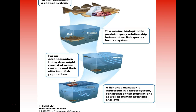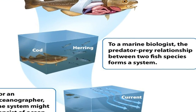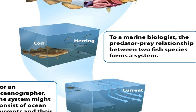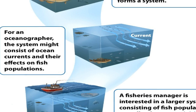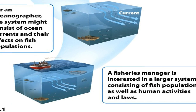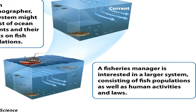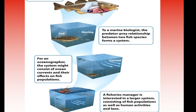A system could mean anything. It could be referring to an individual organism like the codfish here, it could be referring to multiple species of organisms and how they interact with each other, it could be referring to those same organisms and the habitat they live in, or it could be referring to much larger systems, specifically ones that include humans and human activity.